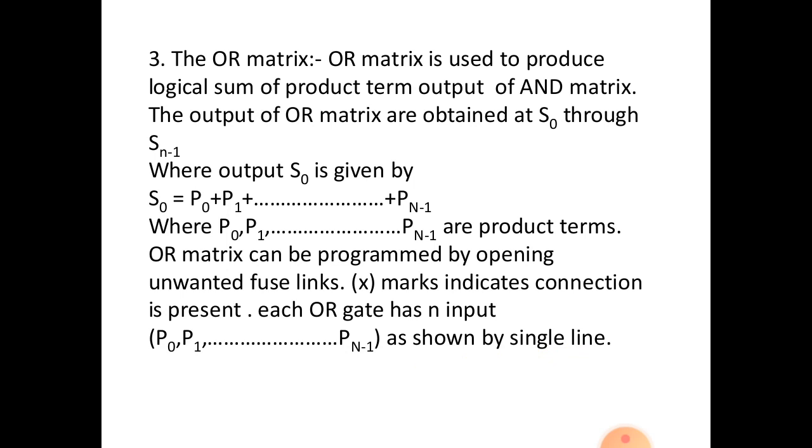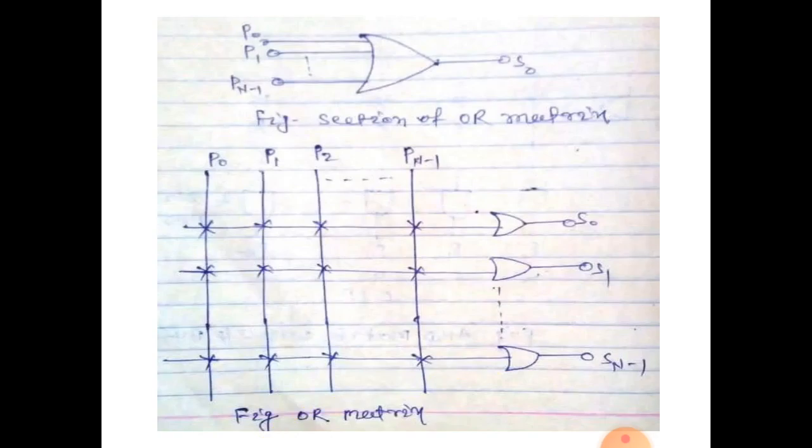Where P0, P1, dot dot Pn minus 1 are the product terms. Now OR matrix gives the output S0, S1, S2, S3. For example P0, P1, Pn minus 1, all the input of OR gates output gets S0.